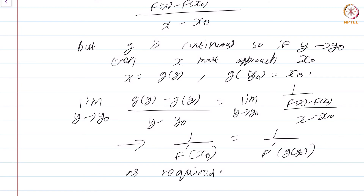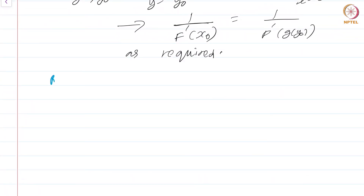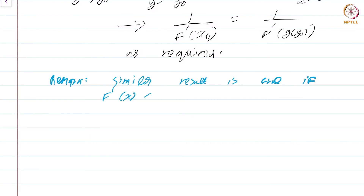The proof is fairly straightforward — you just compute the Newton quotient. The only key part is that there is an inverse function g, which follows from the fact that f is strictly increasing, which follows from the fact that the derivative is greater than 0. This is typical of proofs in mathematics: over the course, we have proved several results, and we are just combining all of them. An immediate remark: a similar result is true if f prime of x is strictly less than 0 for all x in (a, b). That means f will be strictly decreasing, and exactly the same proof will go through.